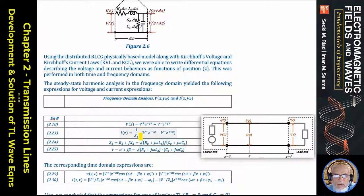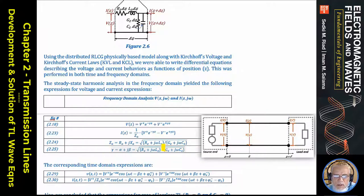This solution has quantities we need to understand. V+ and V- are arbitrary constants from solving the differential equation. Gamma is not arbitrary — it is determined by the physical model: R, L, C, G, and frequency. Z_naught similarly is a physical parameter related to R, L, G, C, and frequency. We want to understand the physical implication of these parameters and what these constants represent. This is what this lecture is about.